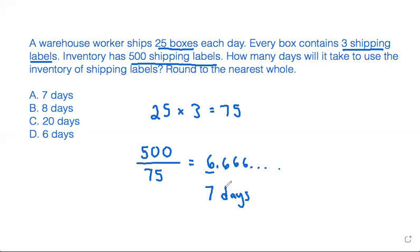It takes them to use 500 shipping labels. Technically it's a little less than 7 days, but they said round to the nearest whole, so it would take 7 days to use 500 shipping labels if they're shipping 25 boxes and each one of those boxes has 3 shipping labels on it.